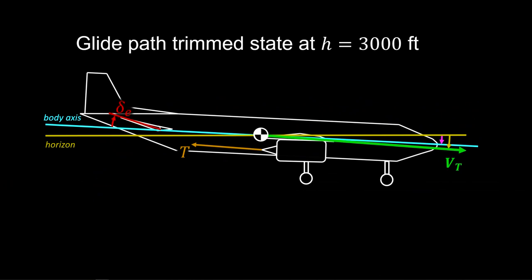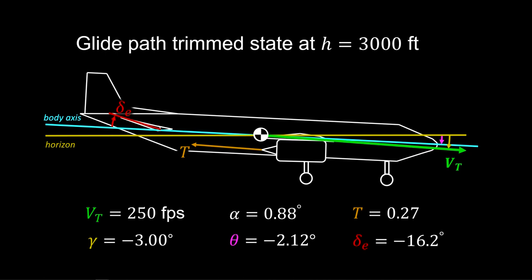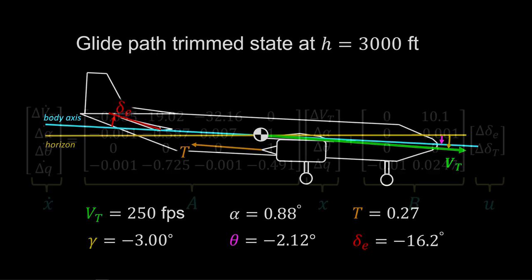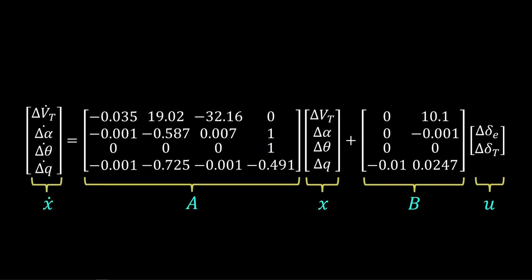We'll look at landing at the start of the glide slope. We assume landing is accomplished with an instrument landing system that begins to guide the aircraft at 3,000 feet above the runway. We trim the aircraft at 250 feet per second with a glide path angle of minus 3 degrees to match the commanded glide slope angle. To trim to these conditions, it requires 0.88 degrees angle of attack, pitched down 2.1 degrees, with 27% thrust and elevator trailing edge up 16 degrees.